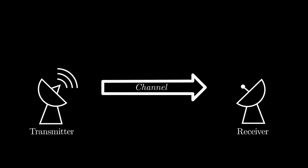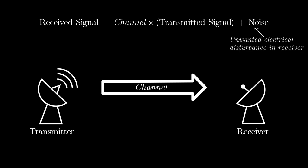Assuming there is only one transmitter, the received signal by the receiver would be channel multiplied by the transmitted signal plus noise. The noise is the unwanted electrical disturbance from the receiver hardware.